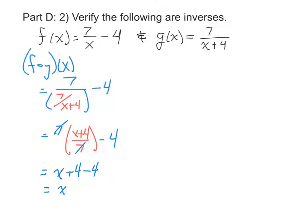The second thing that we have to do is look at g of f of x, so do it in the reverse order. So within g, 7 over x plus 4, I'm going to replace that with f, 7 over x minus 4.